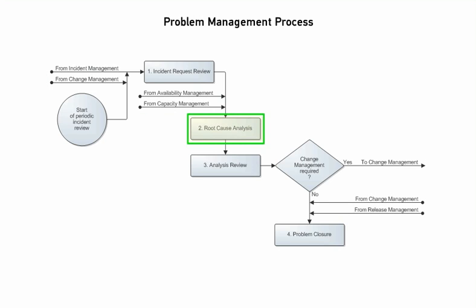If the specialist thinks that a change is required to permanently work around or remove the root cause, they inform the problem coordinator that the change coordinator must be included in the analysis. Otherwise, the specialist implements the preferred structural solution. If the specialist can't find the root cause or can't propose a structural solution, they add the reason for this to the problem investigation record. Regardless, the specialist informs the problem coordinator when the root cause analysis is finished.